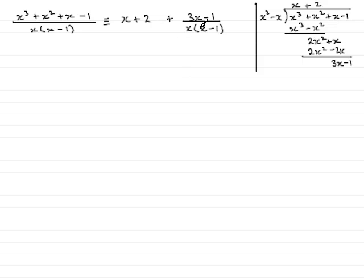So, all I need to do now is split this into partial fractions in the usual way. So, we take the 3x minus 1 over x bracket x minus 1, and because the denominator here has two linear factors.